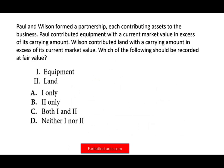Let's take a look at the first question. Paul and Wilson formed a partnership, each contributing assets to the business. Paul contributed equipment with a current market value in excess of its carrying value — meaning they have a gain on the asset. Wilson contributed land with a carrying value in excess of the current value. The question is: which should be recorded at fair value — equipment, land, or both?